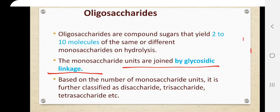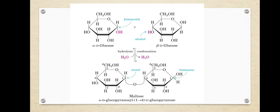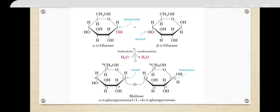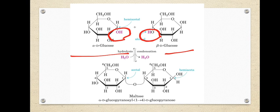Now, what is this glycosidic linkage? In the picture from Lehninger's biochemistry book, you can see there is an alpha-D-glucose and a beta-D-glucose — two glucose molecules are present. You can see there is an OH group on each molecule. What happens during glycosidic linkage formation is that these two OH groups undergo a process called condensation.